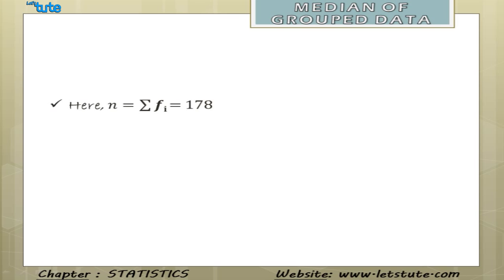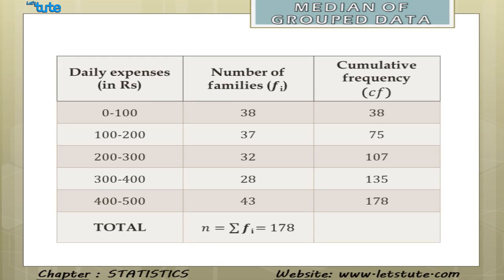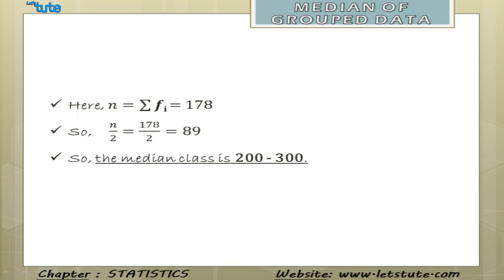After organizing the data and finding the cumulative frequencies, we take n by 2, which is 178 divided by 2, equal to 89. We then locate the class interval whose cumulative frequency is just greater than 89. The class interval 200 to 300 has a cumulative frequency of 107, which is greater than 89 and is the closest. So the median class is 200 to 300.